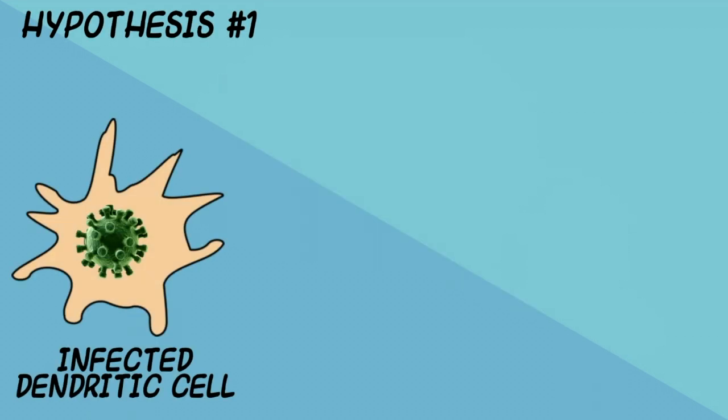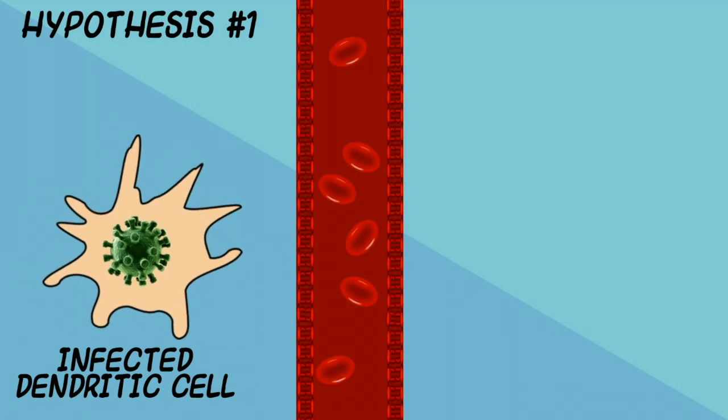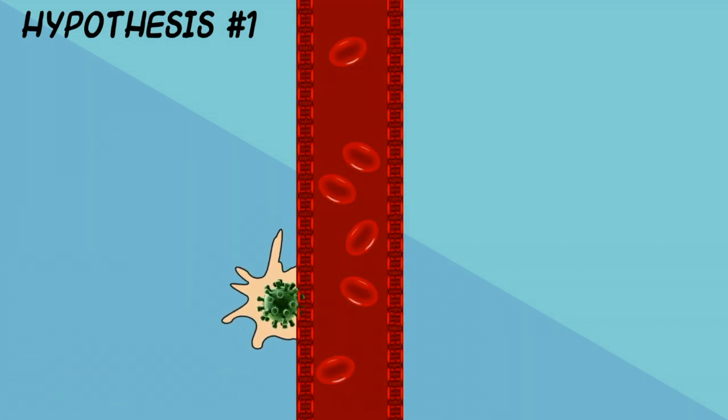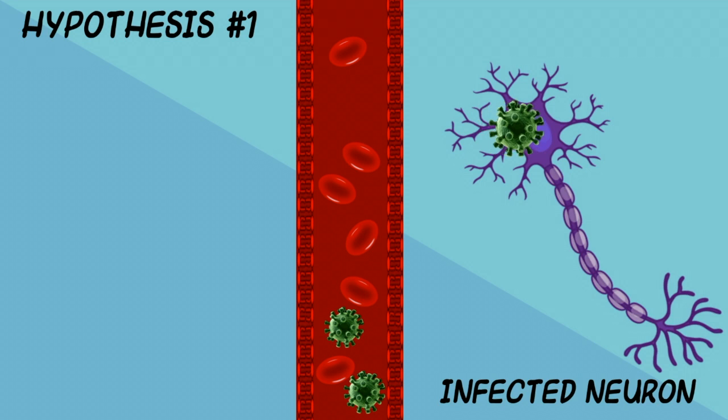First, it is thought that the virus likely infects the central nervous system through hematogenous spread where the infected dendritic cells migrate into lymph nodes leading to the presence of virions in the blood. Then, through passive transport through the endothelium, the viral particles may infect other neurons.